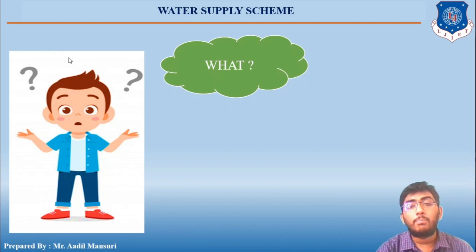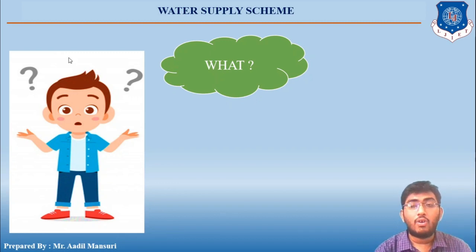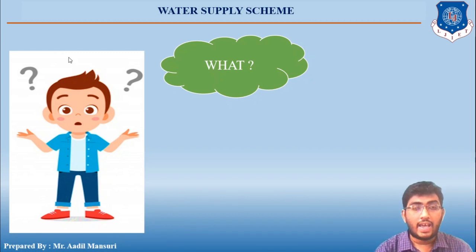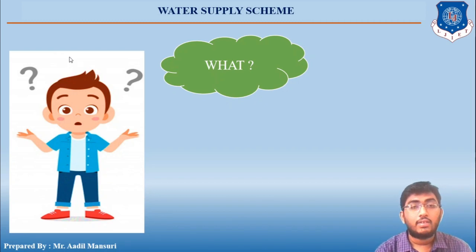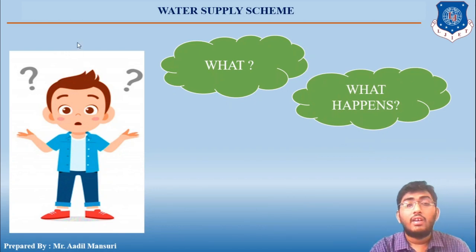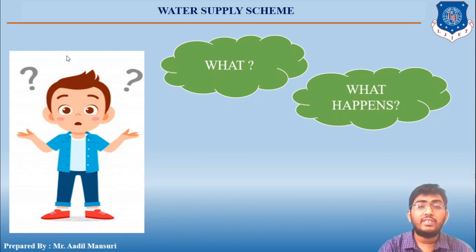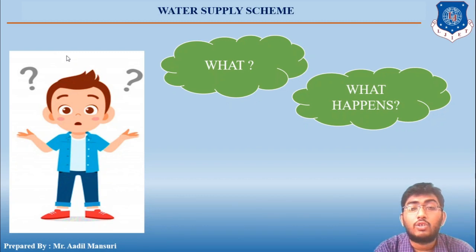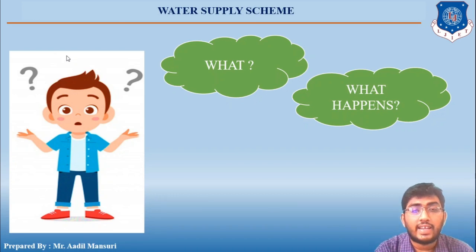Aeration is one of the important unit operations of a water treatment plant for gas transfer. When you bring water in contact with air, exchange of gases takes place. In the aeration process, water is brought in contact with air so that water will absorb oxygen present in air and will remove gases like carbon dioxide and H2S (hydrogen sulfide).